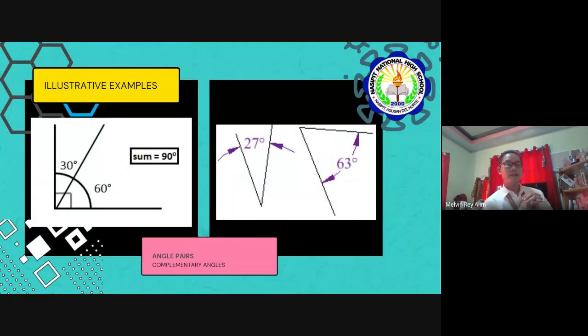We have here illustrations on complementary angles. On the first box, it is obvious even without adding the two angles we knew that the pair is complementary because of the situation of perpendicular lines. On the other side, the second box, the two angles are not together as you can see. But they are still complementary angles. Why? Because adding the 27 degrees plus 63 degrees it will equal to 90 degrees.